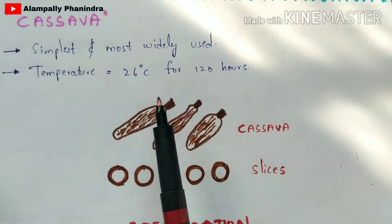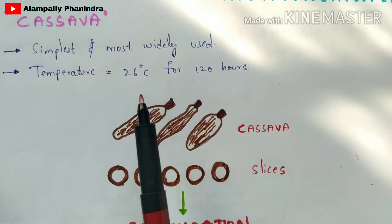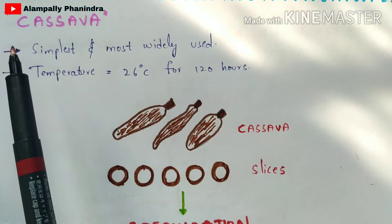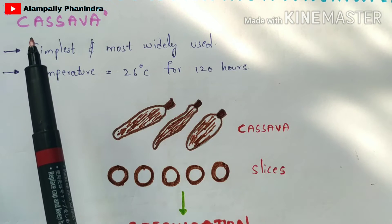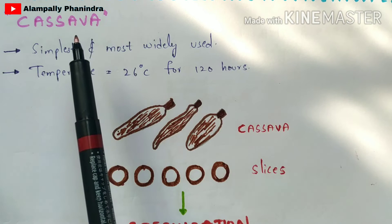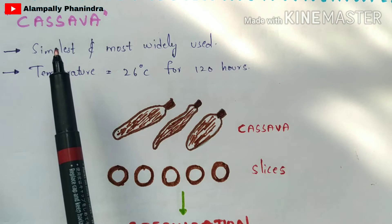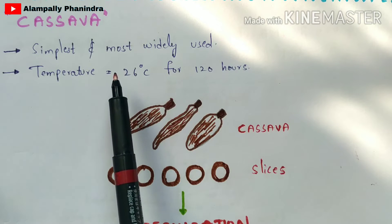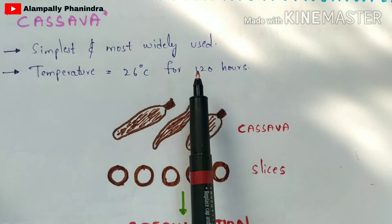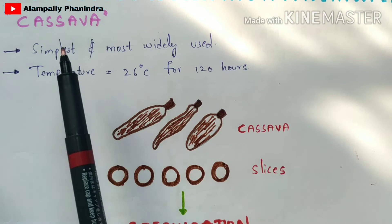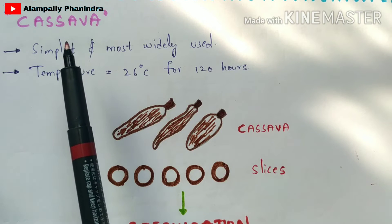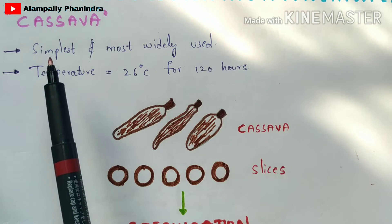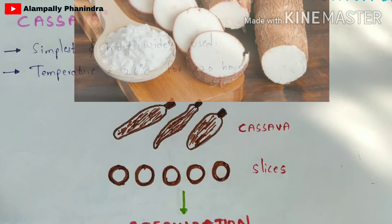There is also a second method for the production of citric acid using cassava. In many industries, cassava is the most widely used material for citric acid production, rather than the bacterium. The reason cassava is most widely used is that in the fermentation process, it requires only less temperature and also consumes less time for the production of citric acid. The fermentation process is used for any type of organic acid production.